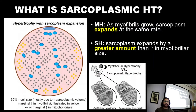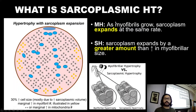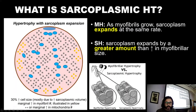So what is sarcoplasmic hypertrophy? Before we answer that question, we need to remind ourselves of the definition of myofibrillar hypertrophy. Myofibrillar hypertrophy is the growth of the myofibrils in size and number. As they grow, the sarcoplasm expands with them at the same time, because as they grow they push on the sarcolemma, making the sarcoplasm area greater, and we get an increase in cross-sectional area.